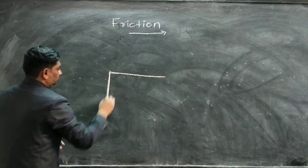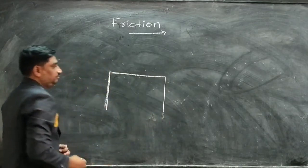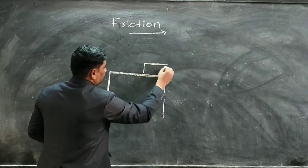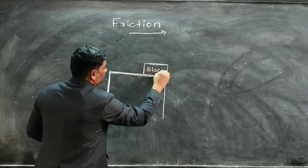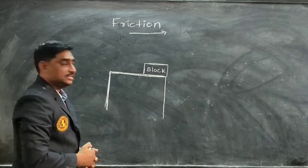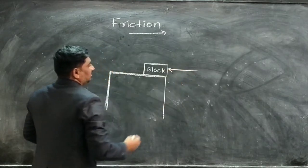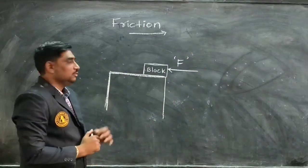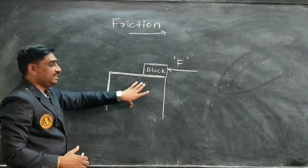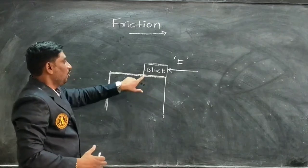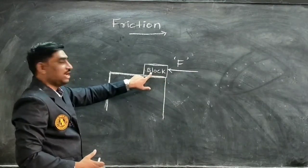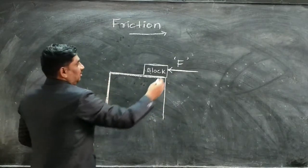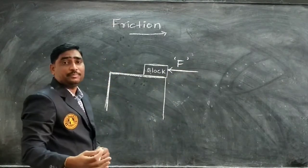For that, let me take a trail which has a smooth surface. At one end of the smooth surface we need to place a block which is made up of wood. Now let me apply an external force, which is denoted with capital F, upon that block of wood in one direction, by any means.